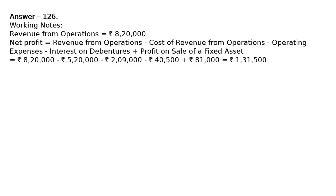That is equal to rupees eight lakh twenty thousand minus rupees five lakh twenty thousand minus rupees two lakh nine thousand minus rupees forty thousand five hundred plus rupees eleven thousand one hundred eighty one, which equals rupees one lakh thirty one thousand five hundred.